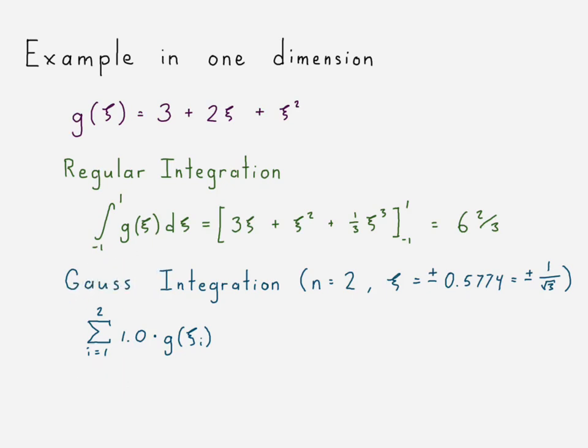We're using Gauss integration, Gauss quadrature, is the same as what we have here. We have 1.0 for our weighting factors, and we just have i equals 1 to 2. So if we go ahead and make those substitutions, we also get 6 and 2 thirds.